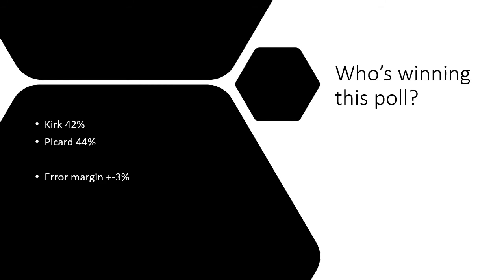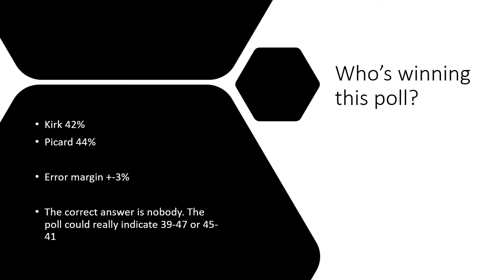For example, in a much narrower poll where Picard is at 44% and Kirk at 42% with an error margin of plus or minus 3%, you'll very often hear people blithely say 'Picard's winning this poll.' It might be slightly more likely for Picard to have more support given this result, but it might not. The correct answer is really nobody — this is sometimes called a statistical tie. The poll, given the data and the error margin, could indicate anywhere from 39 to 47, or even 45 to 41. It could go either way.